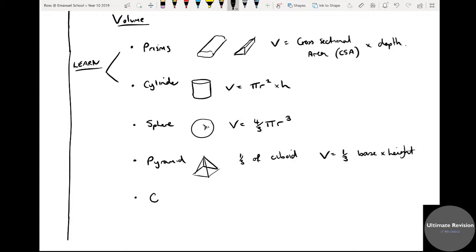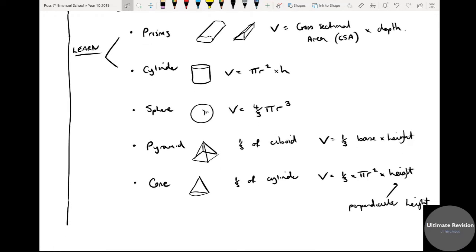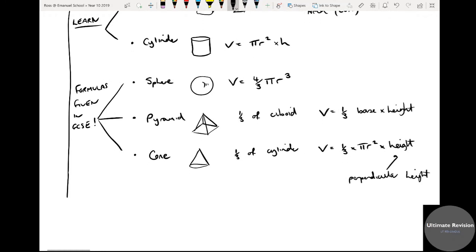And then you've got a special type of pyramid, which is a cone. It's like a circular-based pyramid, so a cone. And a cone is a third of a cylinder. So therefore the volume is equal to a third times pi r squared times the height. Okay. Now it's important that you recognize that that is the perpendicular height, which we'll see later on why that's important. A lot of people use the wrong height for the volume of a cone. Now these three shapes here, these formulas are given. Okay, formulas given. So you don't need to learn them, although it's good practice to know what they are. The formulas are given in GCSE. But it's good practice to know what they are just for your own use.